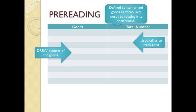The lesson is divided into pre-reading activities, during-reading activities, and post-reading activities. As part of her pre-reading activity, the teacher identified vocabulary words essential to the story. She chose the words consumer and goods — words that most first graders would not have much of a grasp on.